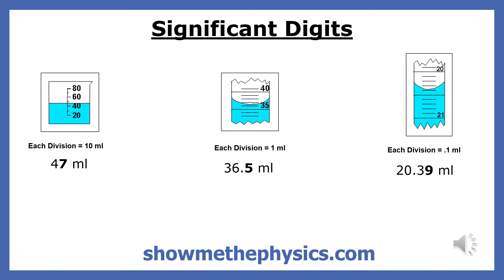The number at the end of these three measurements represents an estimate done by the measurer. The first measurement has two significant digits, the second one has three, and the third one has four significant digits.